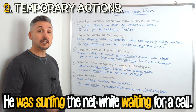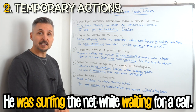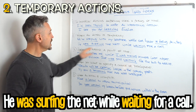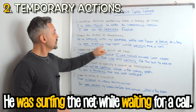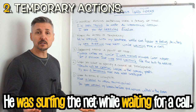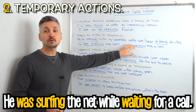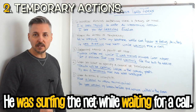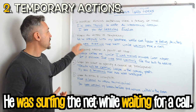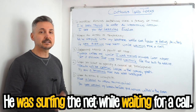Let's take a look at the second example: 'He was surfing the net while waiting for a call.' We have past continuous here. But look at 'waiting' — what tense is that? It's also past continuous, because it's the same as saying 'he was surfing the net while he was waiting for a call.' We don't need to repeat the subject and the auxiliary of the original sentence. So 'he was surfing the net while he was waiting' — we simply say 'waiting for a call.' It's the same thing.